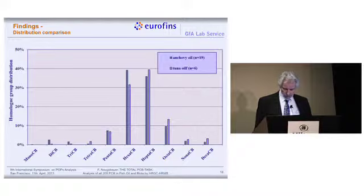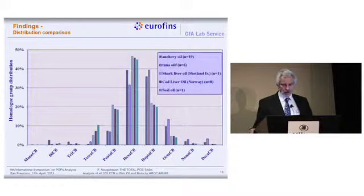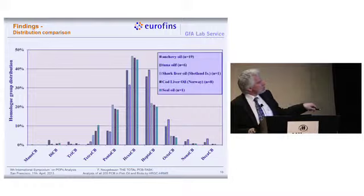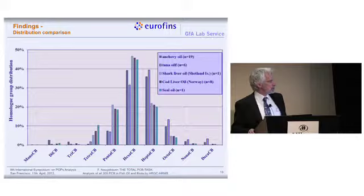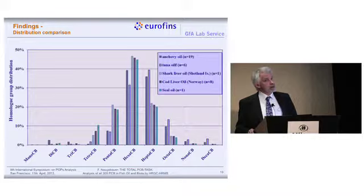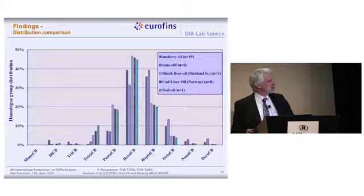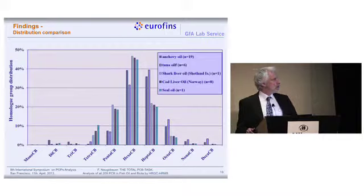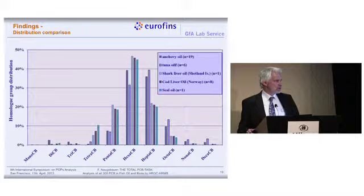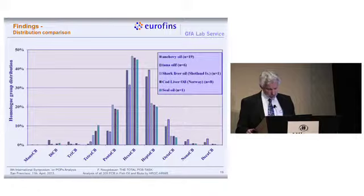Besides tuna and anchovy oils, I also did some other work. Here we have shark liver oil, cod liver oil, and seal oil — all showing pretty much the same distribution: penta to hepta PCB mainly, with a maximum at hexa and hepta. There are differences: my tuna and anchovy oils may be refined or processed, because processing raw fish oil — distillation or active carbon filtration — can easily remove lower-chlorinated compounds as well as dioxin-like congeners. So the profile varies depending on the fish species and trophic level.